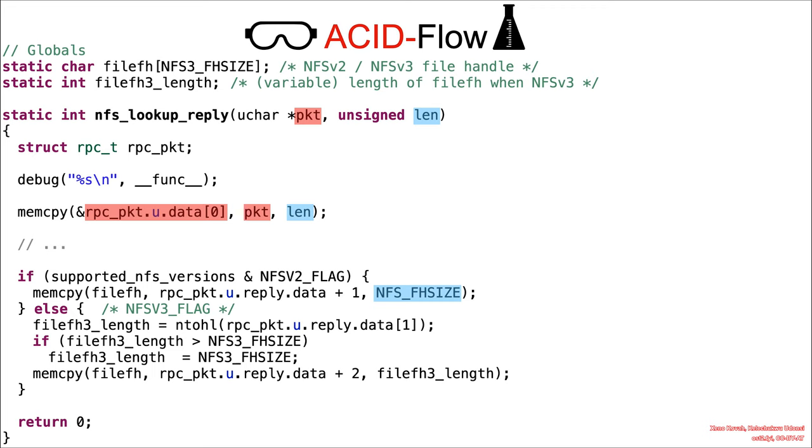Now we move down here and we see a memcopy that's taking a hard-coded size and it's sourcing it from the reply data plus one. So that's going to be somewhere here, and as long as that length was essentially two or greater, then data plus one would have been attacker controlled values and it's copying that into filefh.